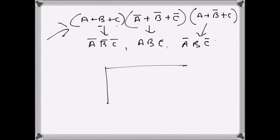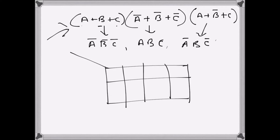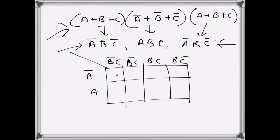Since we need to find the minimized sum of product expression, we need to find the ones in the truth table. The zeros are: a bar b bar c, a b c, and a bar b c bar. Let's identify them on the K-map — a bar b bar c is here (zero), a b c is here (zero), and a bar b c bar is here (zero). The rest will be ones.